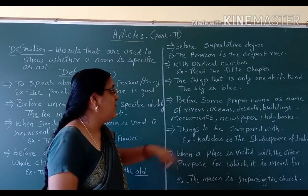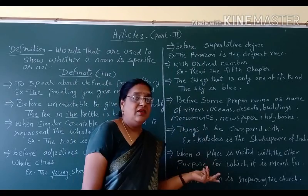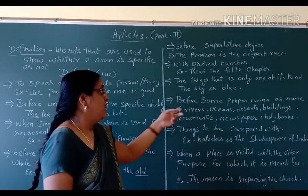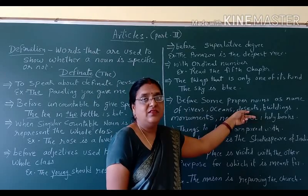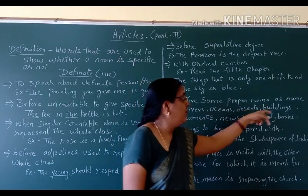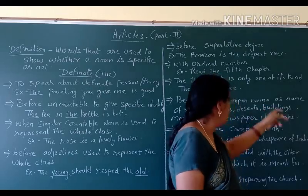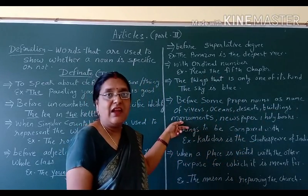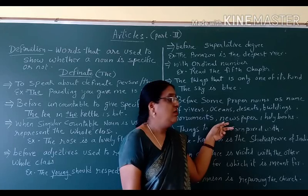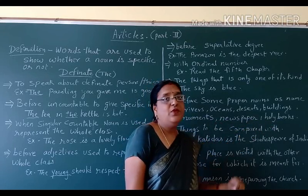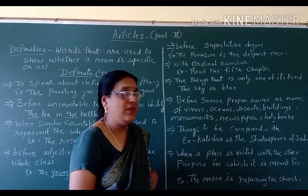Before some proper nouns — as names of rivers: the Amazon, the Ganga, the Yamuna, the Narmada. Oceans: the Indian Ocean, the Pacific Ocean. Deserts: the Thar Desert, the Sahara Desert. Buildings: the Parliament House, the White House. Monuments: the Monument, the Taj Mahal, the Red Fort. Newspapers: the Times of India, the Express. Holy books: the Ramayana, the Quran, the Mahabharata, the Gita, the Bible. For any such proper noun we use the definite article.